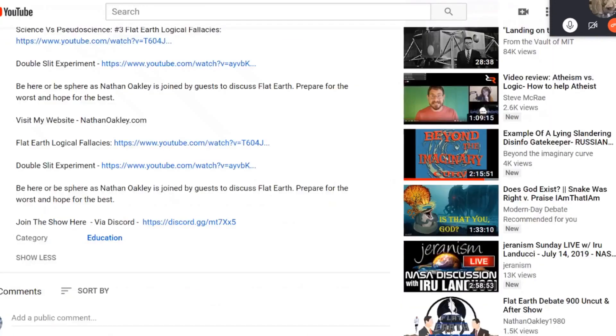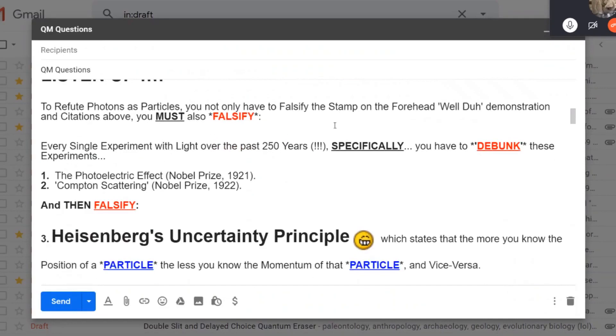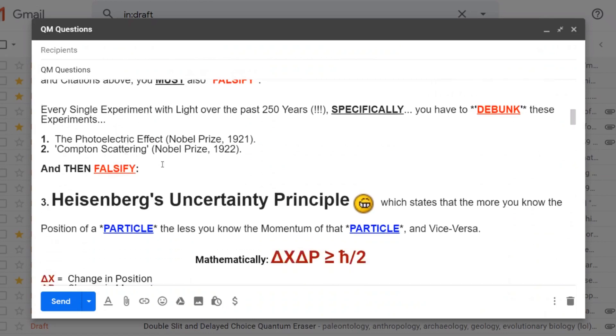Back to the presentation. To refute photons as particles, you not only have to falsify the well-done demonstration that I just gave and the citations above, you must also falsify every single experiment with light over the past 250 years. Specifically, you have to debunk these: number one, the photoelectric effect, Nobel Prize 1921; number two, Compton scattering, Nobel Prize.